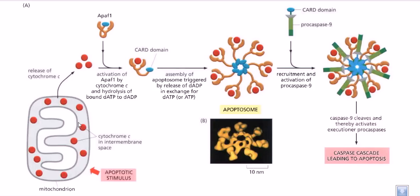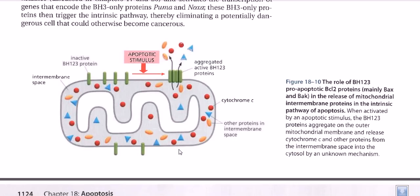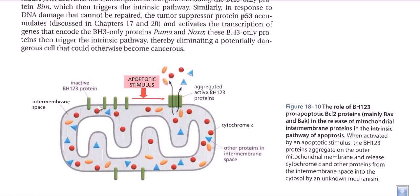Now let us think about why cytochrome c peels off from the intermembrane space into the cytosol. The normal residence for cytochrome c is in the intermembrane space of mitochondria. So what makes it come out into the cytosol? There are internal stimuli at work. Looking at the picture, in the mitochondrial outer membrane there are different proteins called BH proteins or BCL proteins — sometimes named Bax or Bak — which have different subdomains inside the protein. According to those subdomains they are called BH1, BH2, BH3, etc.